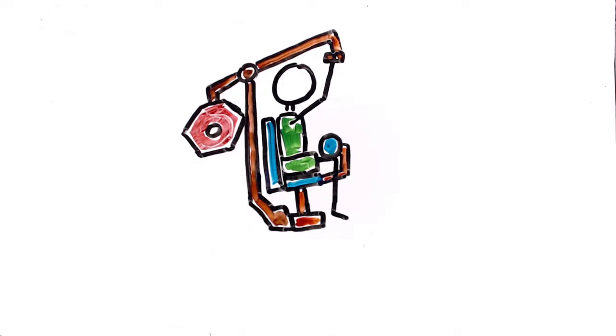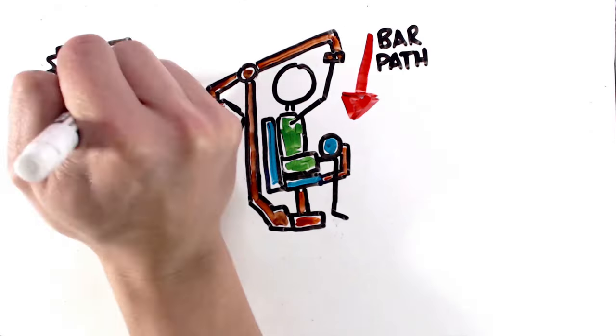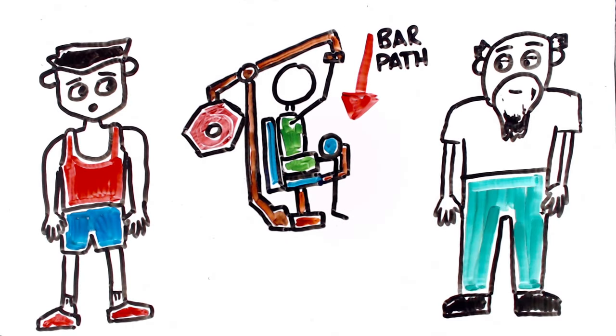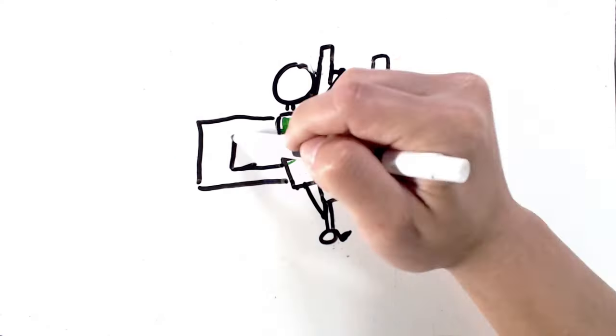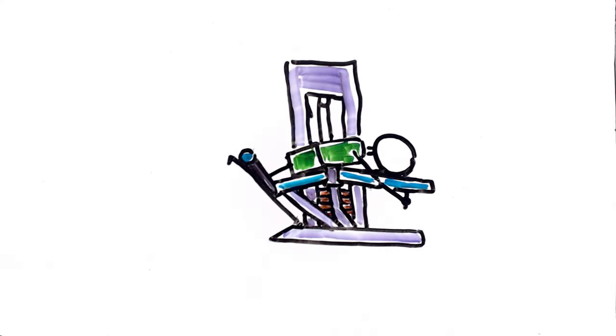Since most machines provide a fixed movement pattern, the learning curve drops way down, making it perfect for beginners and the elderly. Fixed movement patterns also means you can isolate muscle groups much better. Want to build your hamstring flexion? Look no further than the hamstring curl machine.